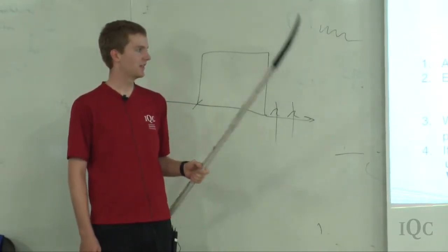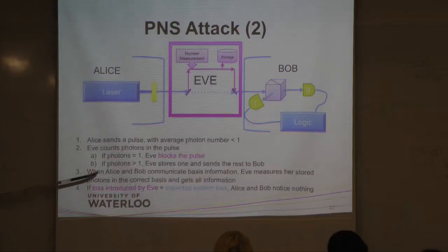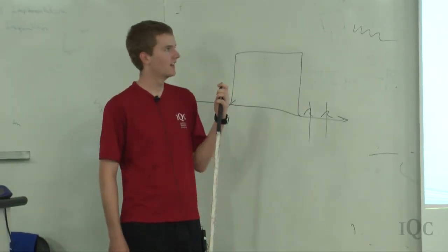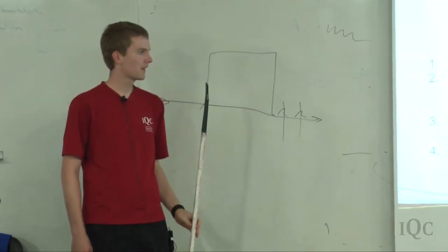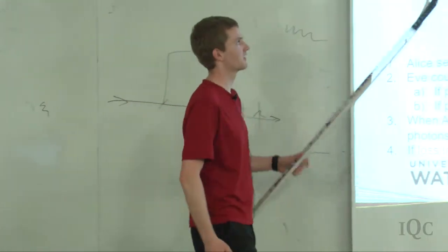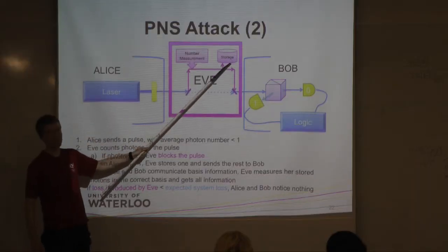So then Alice and Bob, as you know, they have to exchange basis information in the end. They have to compare their bases so they can only keep the ones where they measured in the same basis. So Eve just follows along with this. She gets the information as well. And then she can measure her stored photons, each of them in the correct basis.